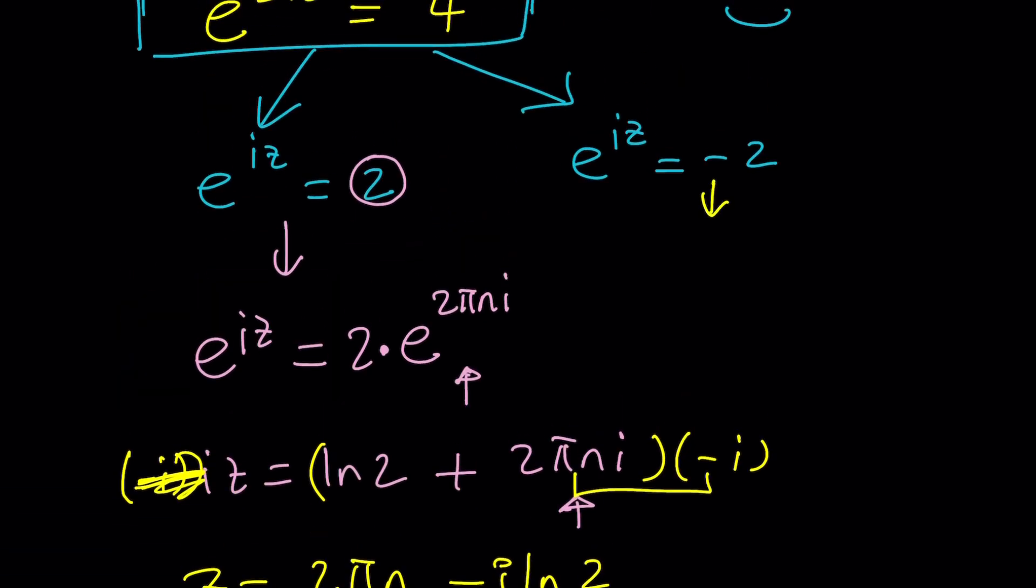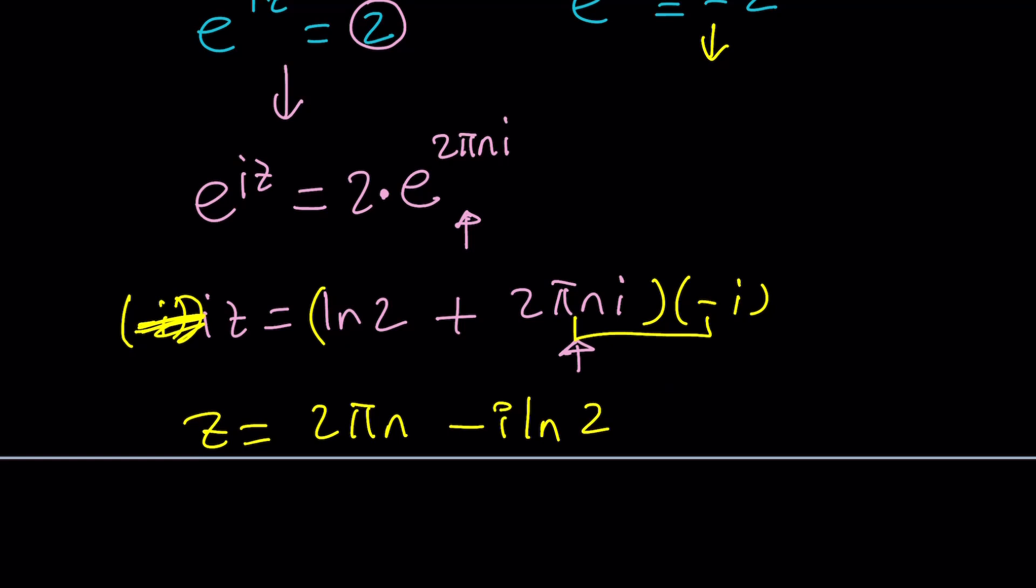If you use this one, that should give you something similar. But instead, you need to write the negative 2 as 2 times e to the power i times pi. But don't forget to add the multiples of 2 pi. Make sense? And then, when you do the natural logs, you're going to get something like this.